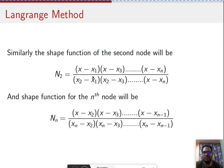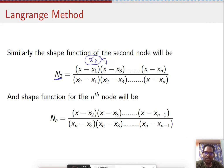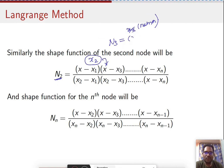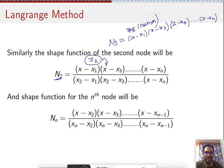For the second node, the same approach is adopted. The most important point is that for node two, the x2 term does not appear in the numerator. Similarly for node three, x3 will not be present in the numerator. So for N3, the numerator is x minus x1 times x minus x2, then x minus x4 — skipping x3 — continuing until x minus xn.